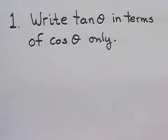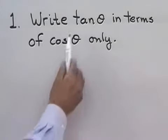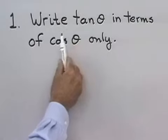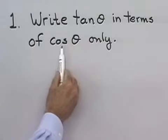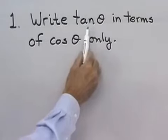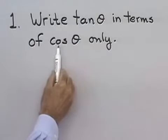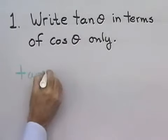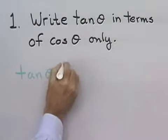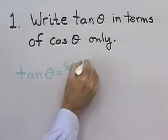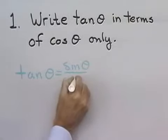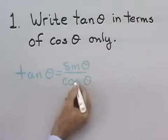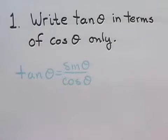Our first problem: we want to write tangent theta in terms of cosine theta only. It turns out that we can write any trigonometric function in terms of an expression that has only whatever other trigonometric function we want in it. I'll start by using the ratio identity: tangent theta is equal to sine theta over cosine theta.